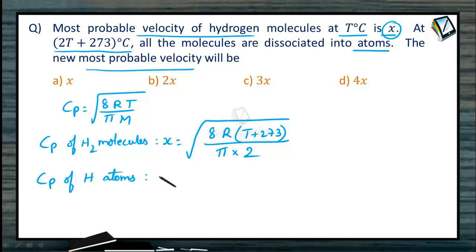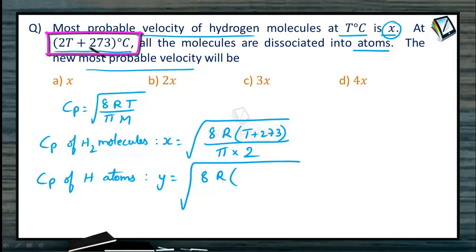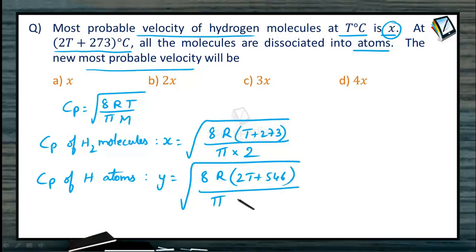Now let y be the most probable velocity of the hydrogen atoms. That is equal to √(8R · (2t + 546) / (π · 1)). The temperature 2t + 273 degree centigrade becomes 2t + 546 Kelvin. We use atomic mass equal to 1 because we are calculating the velocity of hydrogen atoms, not molecules.